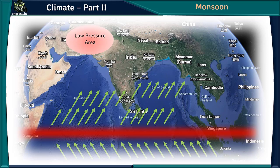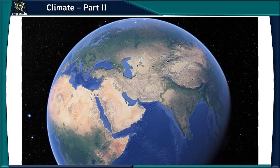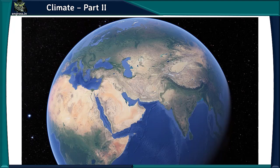Westerly jet streams blow over the Ganga Plain throughout the year except in summer. During winter, cyclones from the Mediterranean Sea are brought into India by the westerly jet stream, causing rainfall on the Ganga Plain and snowfall in the Himalayas — this rainfall, called Mahavad, is crucial for the cultivation of rabi crops like wheat. During summer, the westerly jet stream moves north of the Himalayas following the sun, and this movement is one of the factors responsible for the monsoon.